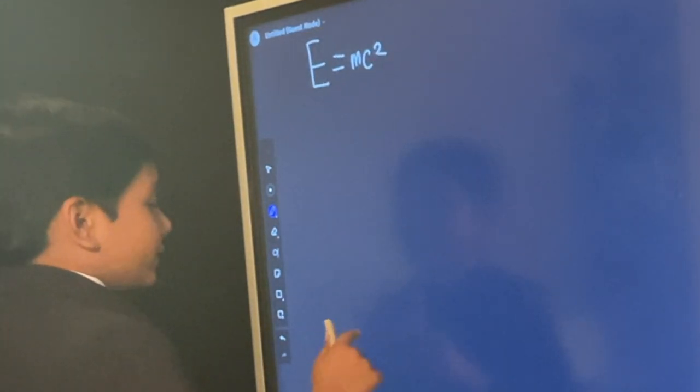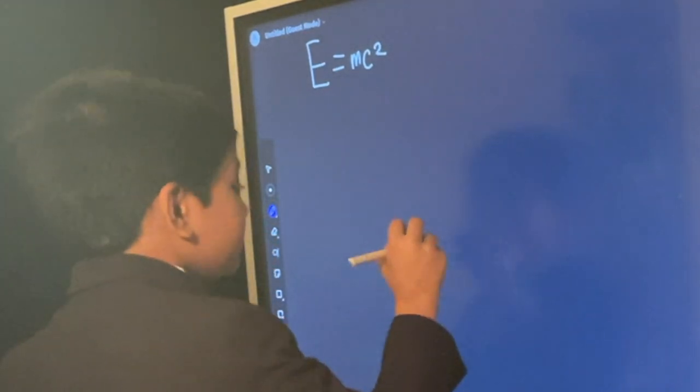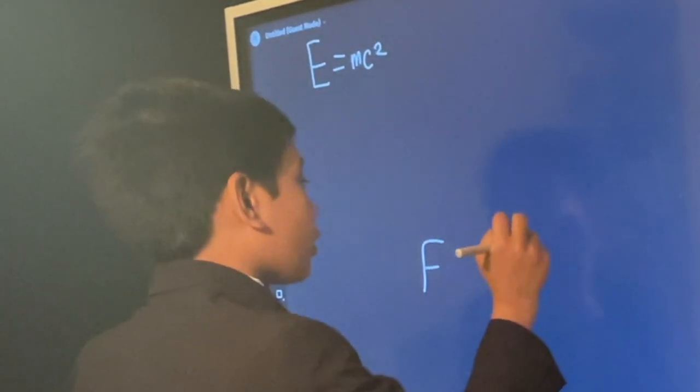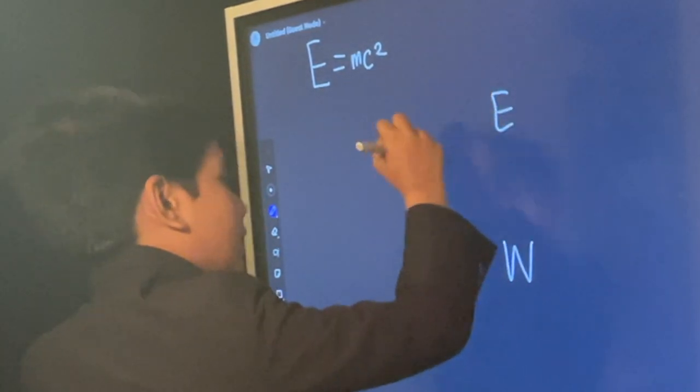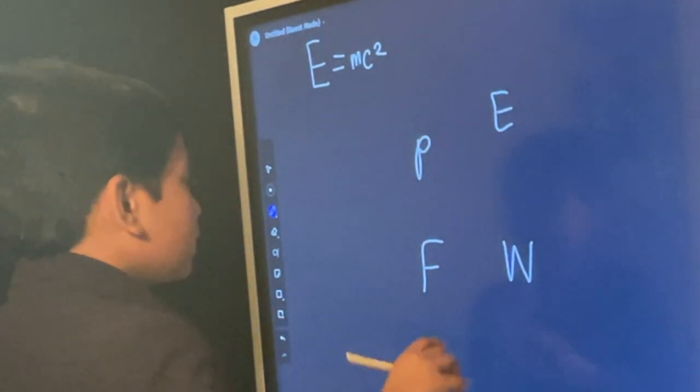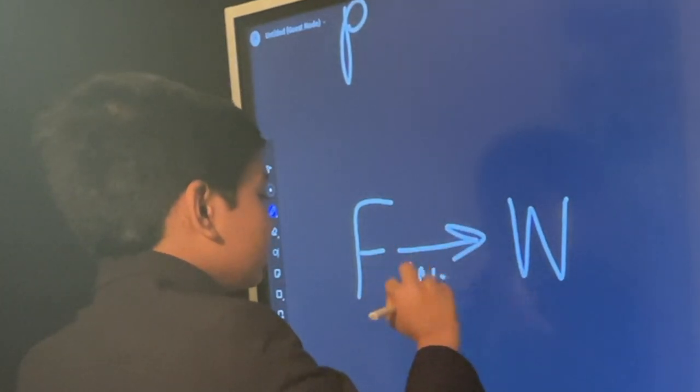So in kinematics, there are some major concepts like force, work, energy, and momentum. Now, force is connected to work by W equals FD.